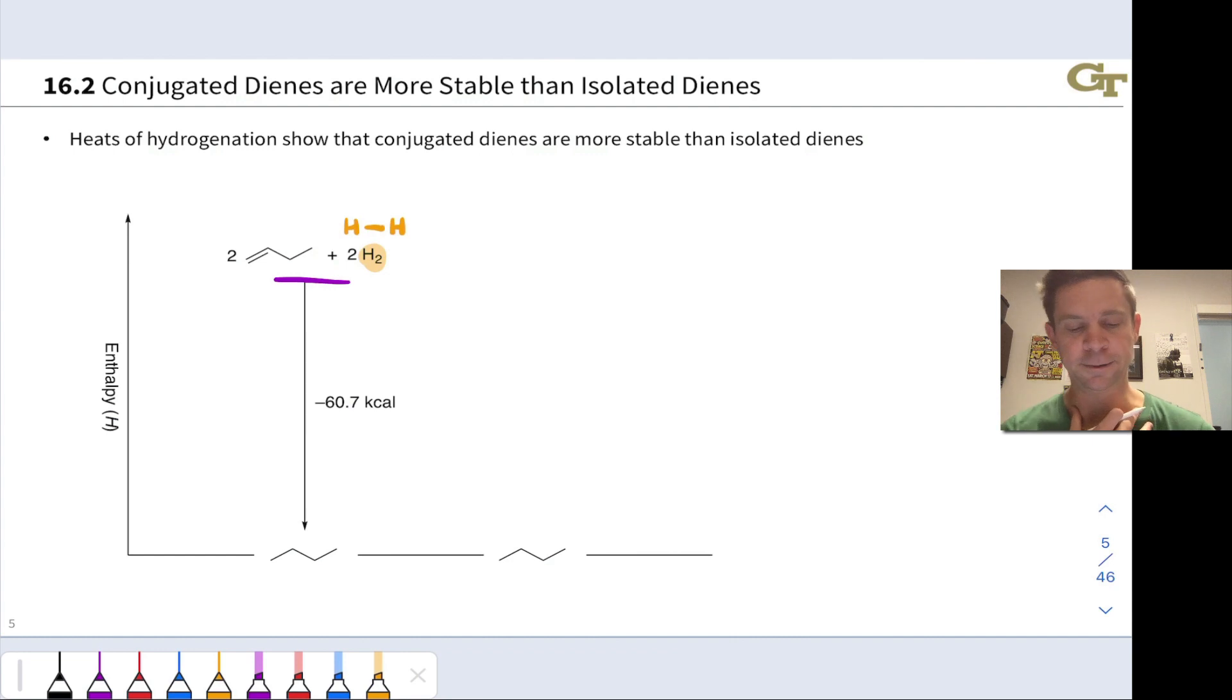That's going to lead in this particular case to butane, which is the molecule down here. Now imagine that we took not two moles, but one mole of a molecule in which this C-C single bond has become a double bond. That's 1,3-butadiene. And we again treated that with hydrogen gas, such that two equivalents of H2 added to the alkene. This leads to the same product. Notice that this is butane. Adding hydrogens here and here and here and here is going to lead to butane, the same product.